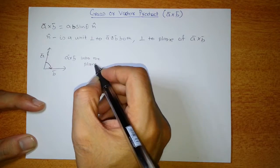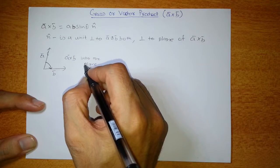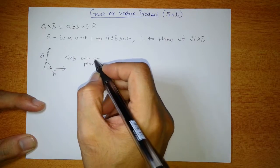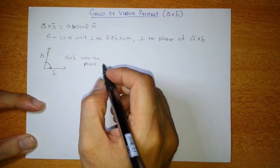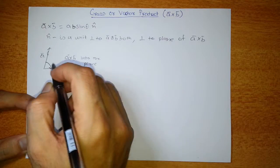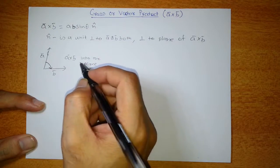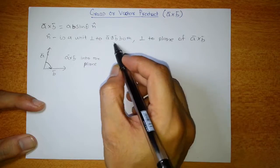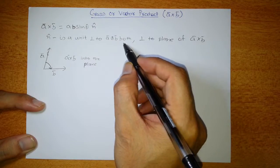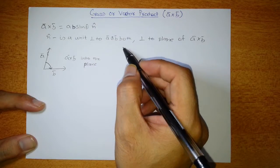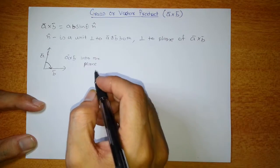I will be making a separate video for the direction of cross product only, so watch that video also. To summarize: A cross B is perpendicular to the plane containing A and B, or perpendicular to both A as well as B.